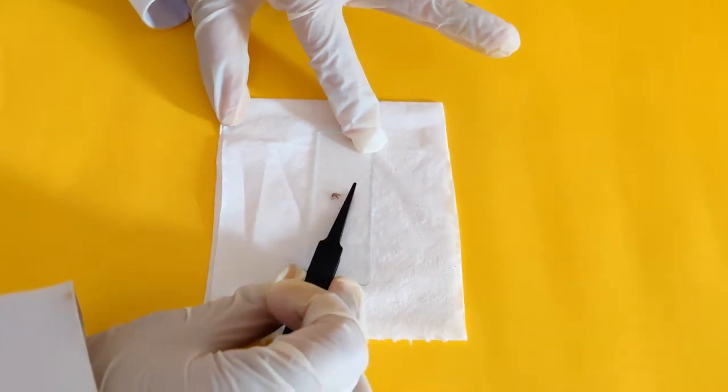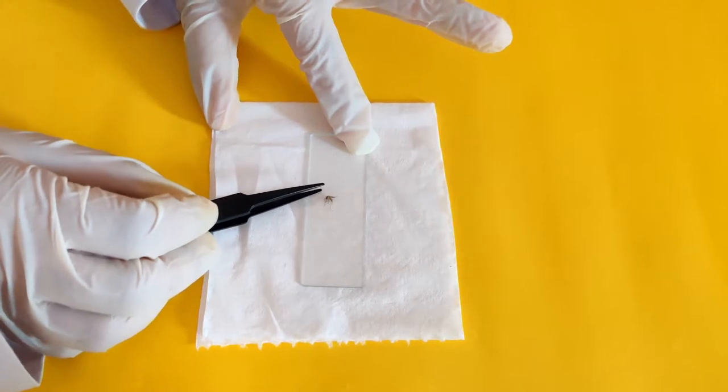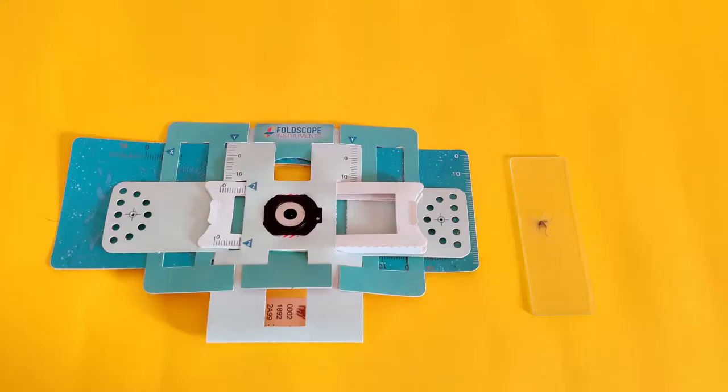With the help of the tweezers, carefully push out any air trapped under the tape or sticker through the sides. The mosquito sample slide is now ready to be mounted in the foldscope.